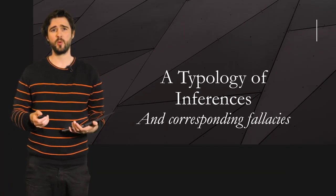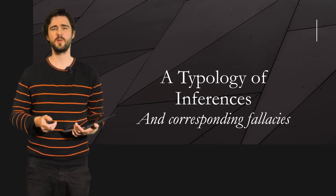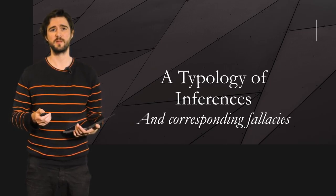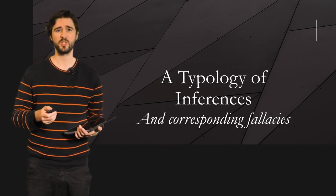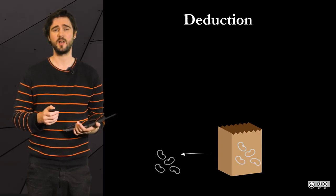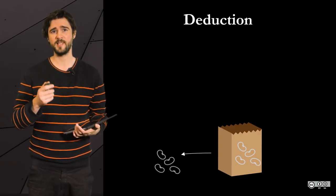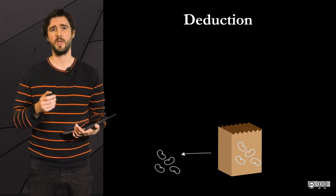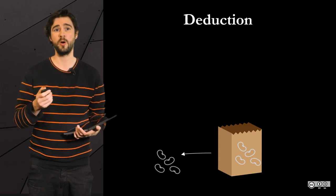In a previous video, we explained what an inference was and said that there were three types of inferences. Let's exemplify them with the traditional example of the white beans in the bag. In the case of deduction, the conclusion necessarily derives from the premises — and I insist on the word necessarily.